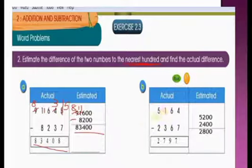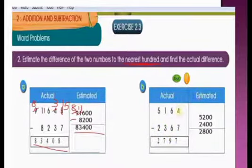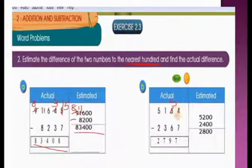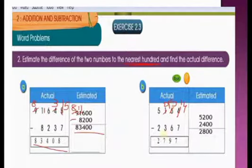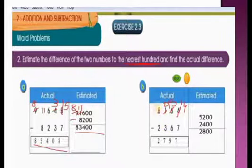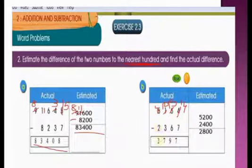Next, problem B: 5,164 minus 2,367. So 4 is smaller than 7, take borrow from 6 — it becomes 5 and this becomes 14. 14 minus 7 is 7. 5 is smaller than 6, so take borrow from 1 — it becomes 0 and this becomes 15. 15 minus 6 is 9. 0 is smaller than 3, so take borrow from 5 — it becomes 4 and this becomes 10. 10 minus 3 is 7; 4 minus 2 is 2. Actual answer: 2,797.